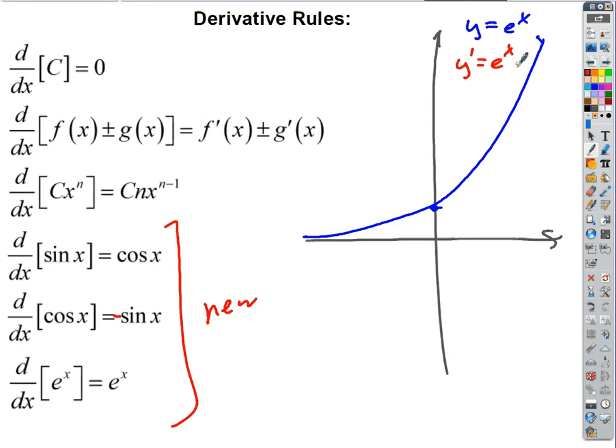If I plug in x equals 10, the value of the function is e to the 10. What's the value of the slope? The slope is always the same as the value of the function. It's pretty bizarre.